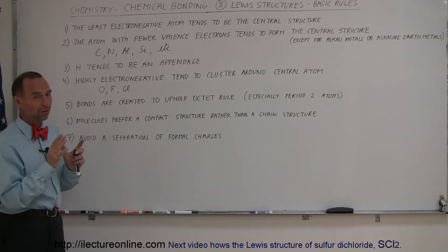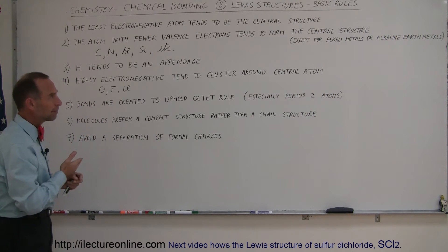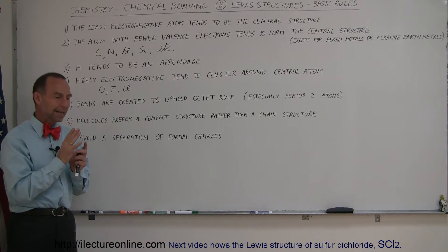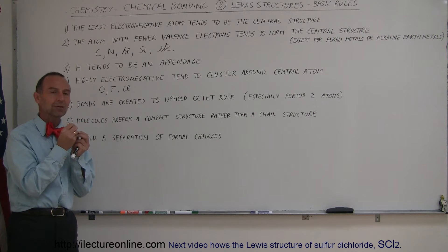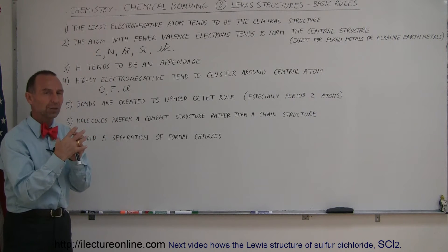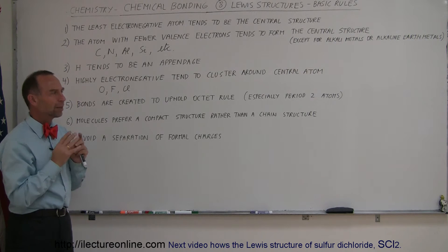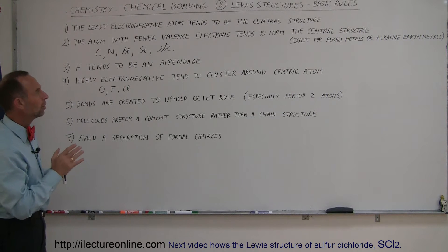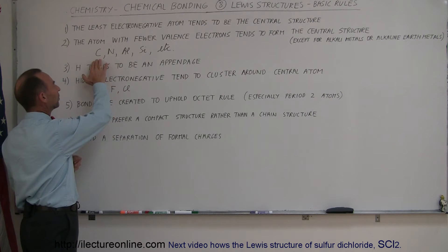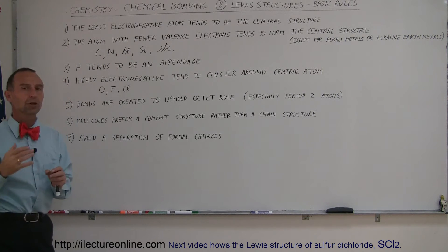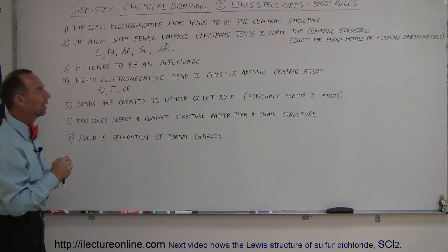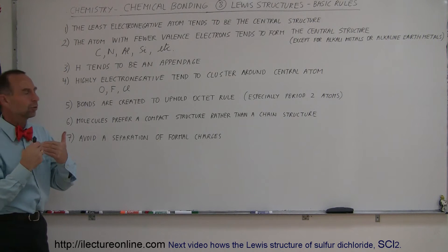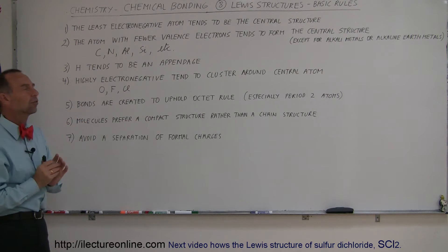Of course, the ones on the left side of the periodic table — the alkali metals and the alkaline earth metals — tend not to be part of that. They tend to donate rather than share because their electronegativity is so low, and so they don't tend to take on the central spot of the molecule. We're looking more at atoms such as carbon, nitrogen, aluminum, and silicon, which have a lower number of valence electrons and therefore tend to be lower in electronegativity — those are the ones that tend to take on the central spot.